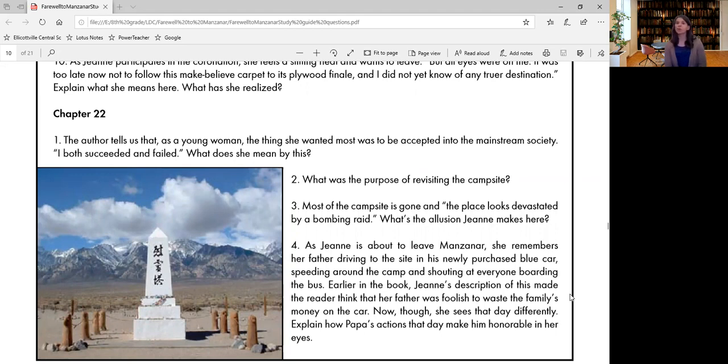I would encourage you to look for what she says as far as how she succeeded and failed. We're looking at both sides of it. So she wanted to be accepted and she was, and she wanted to be accepted and she wasn't. Both parts of that. And some of it we have already read, but she'll touch on it a little bit as well.